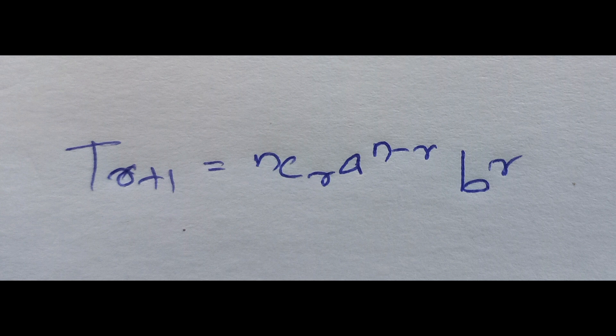The general term formula is T(r+1). Let's say there is a term in the expansion - we will learn how many terms there are, then what the middle term means, and then how to find the coefficient of a specific term.